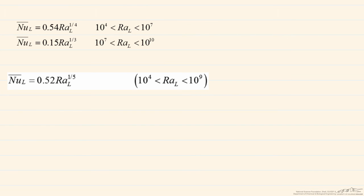Some typical correlations include those below. So these first two are for horizontal plates where it's either the upper surface of a heated plate, in other words, the temperature of the plate surface is greater than that of the outside fluid, or the lower surface of a cooled plate.